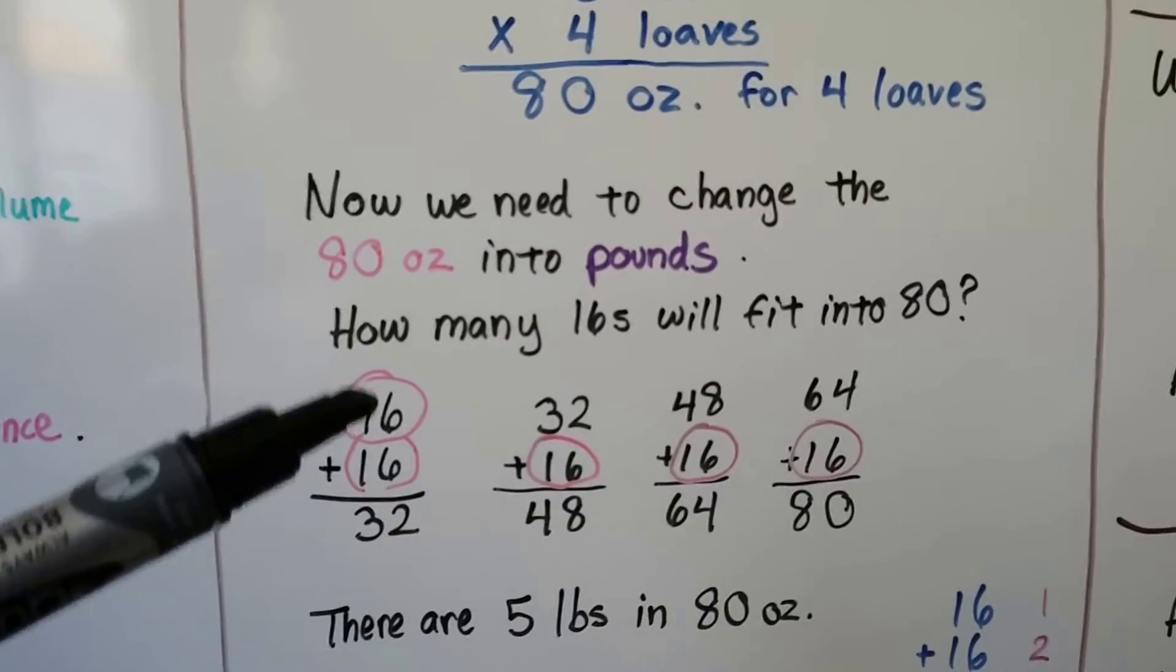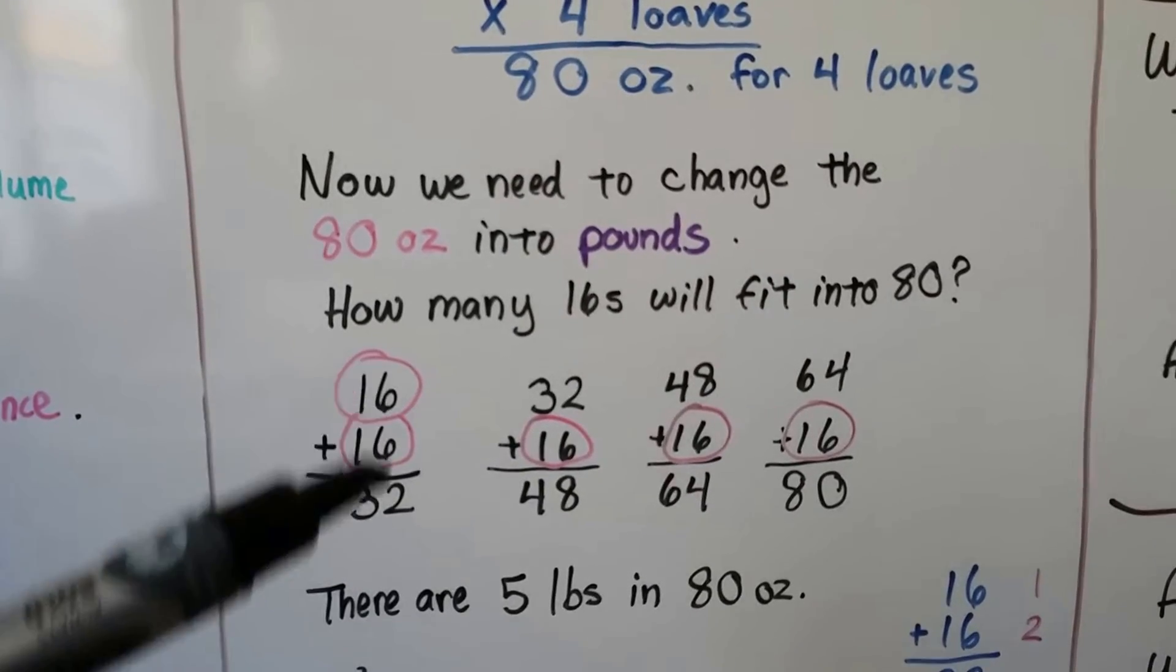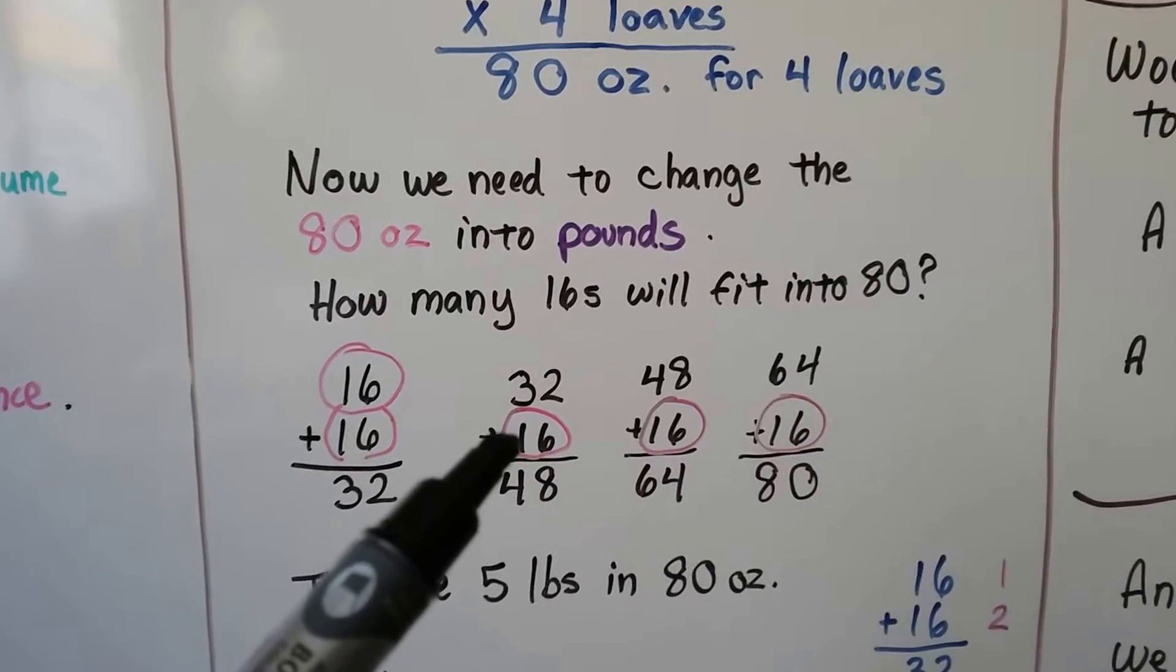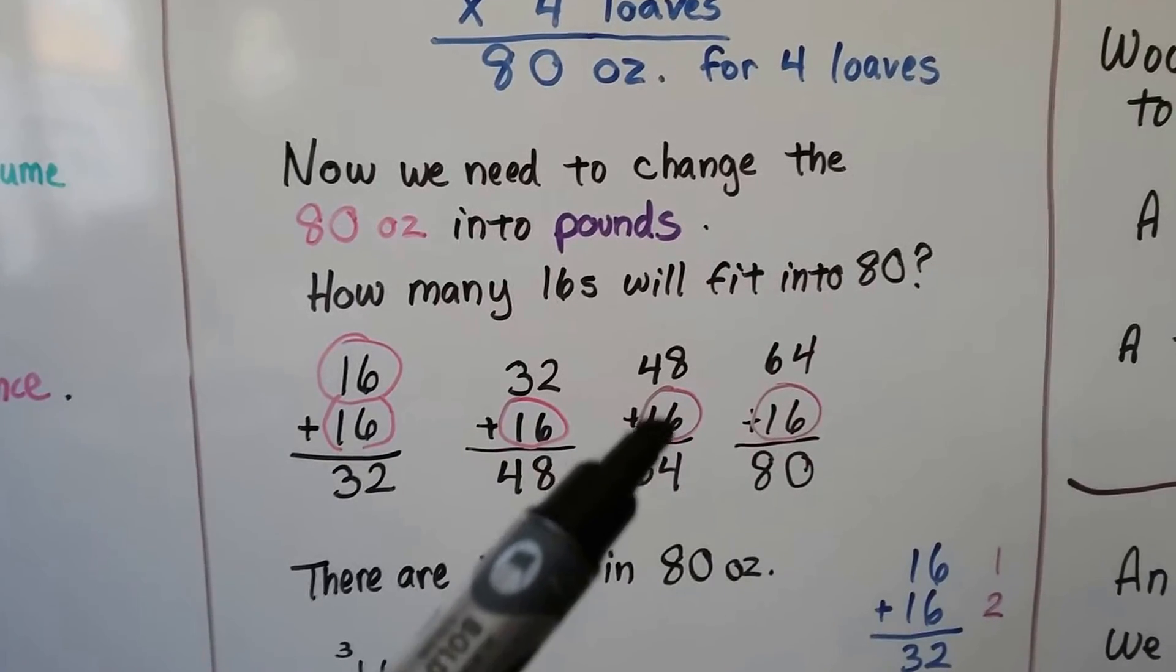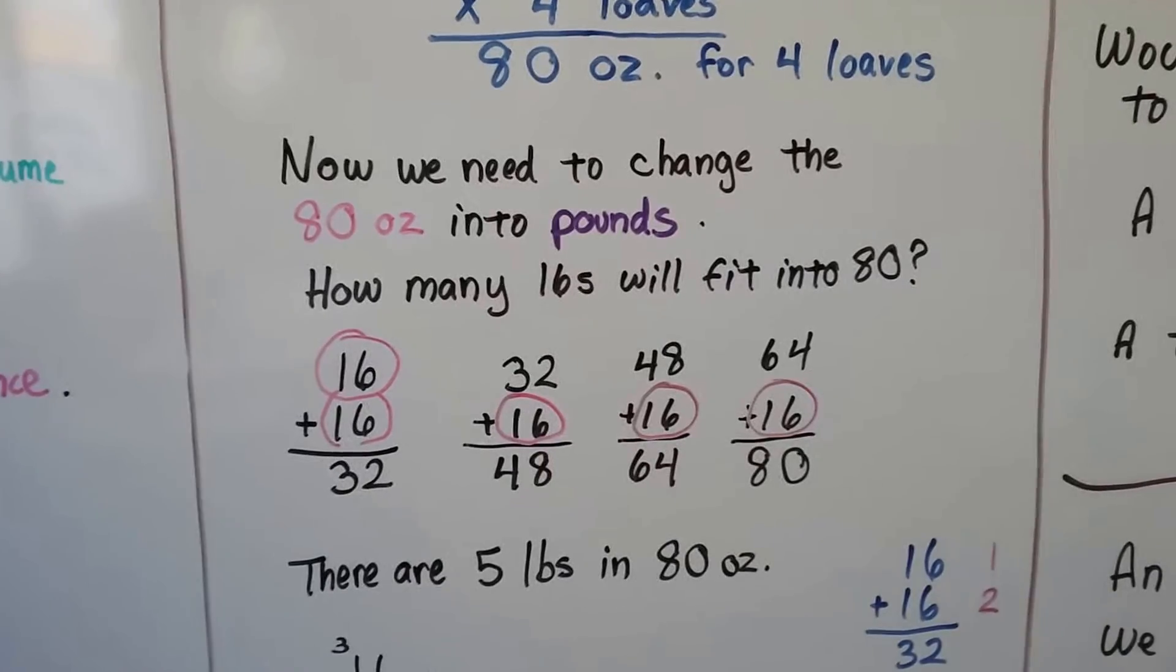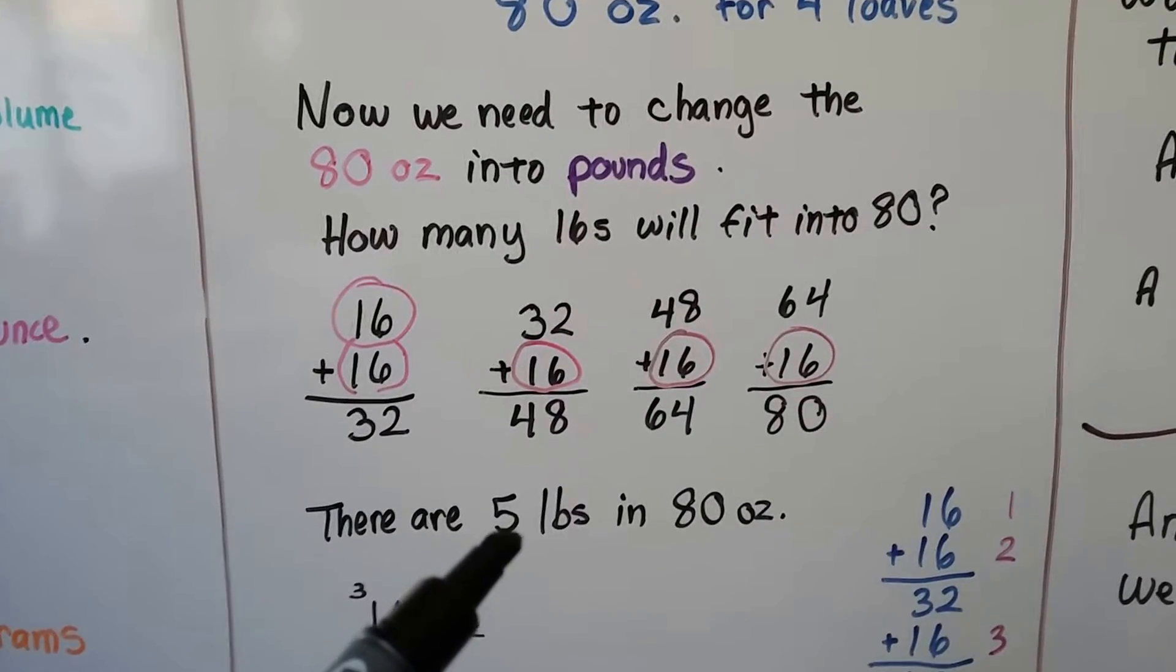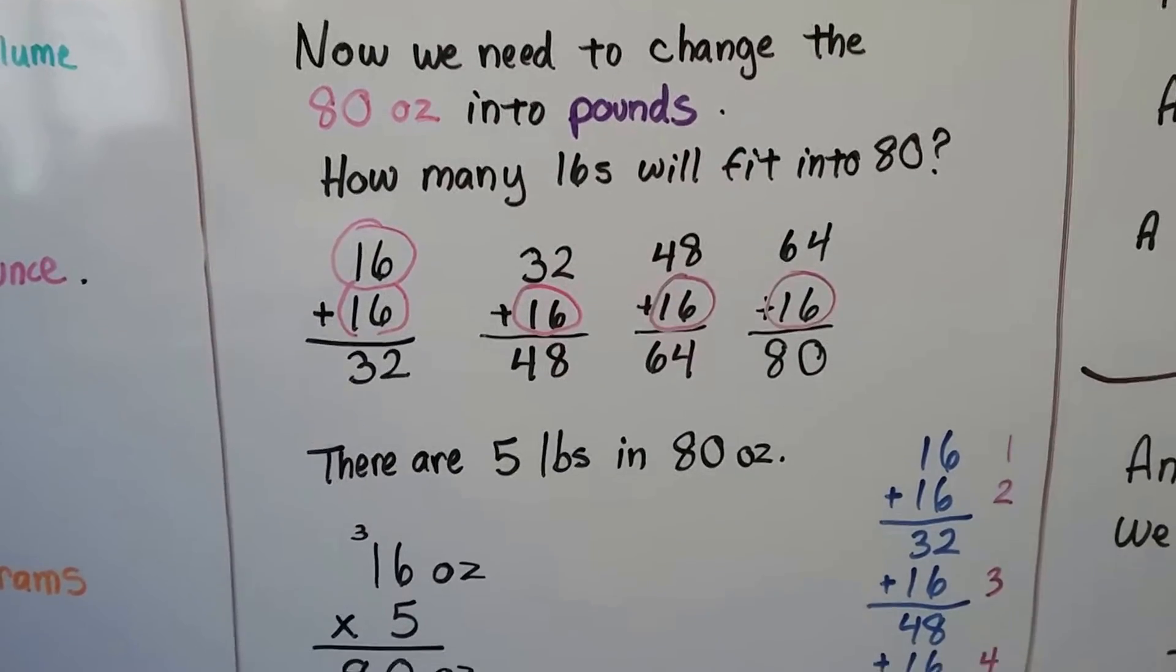Because one pound is 16 ounces. We have to figure out how many 16s are in this 80. We can add them. 16 plus 16 is 32. That would be 2 pounds. Because each 16 is 1 pound, each 16 ounce. We take the 32 and add another 16 ounces. That's another pound, and we get 48 ounces. We take the 48 and add another 16. That's another pound, and we're at 64 ounces. And if we add another 16, we'll be at 80. So that's 1, 2, 3, 4, 5 16s. That means there's 5 pounds, because each 16 ounce is equal to 1 pound. There are 5 pounds in 80 ounces.